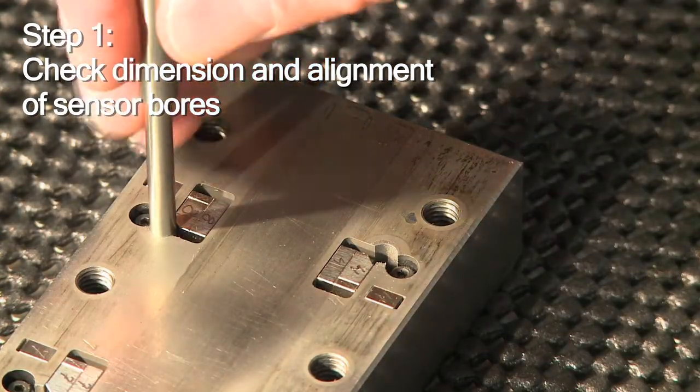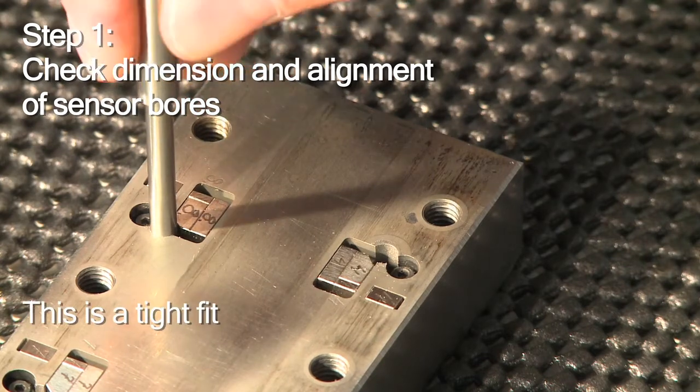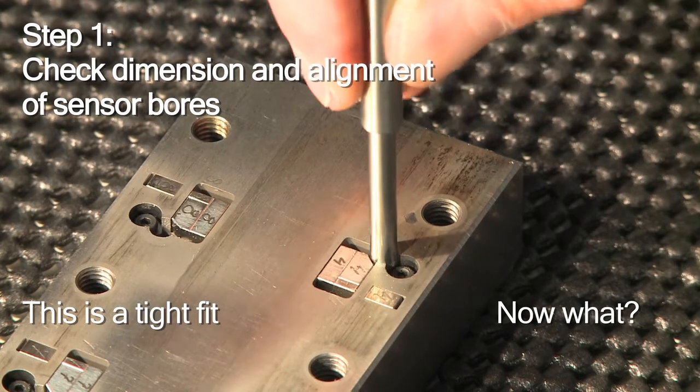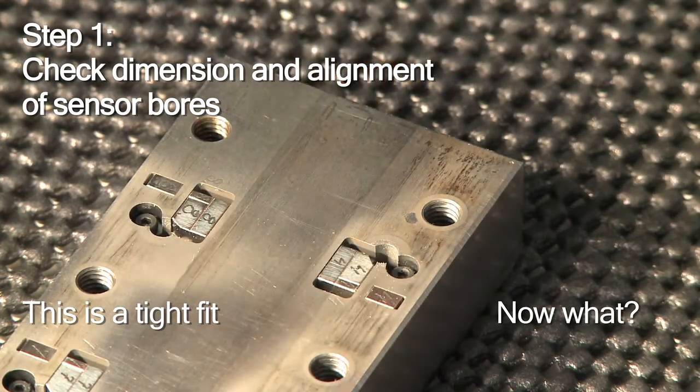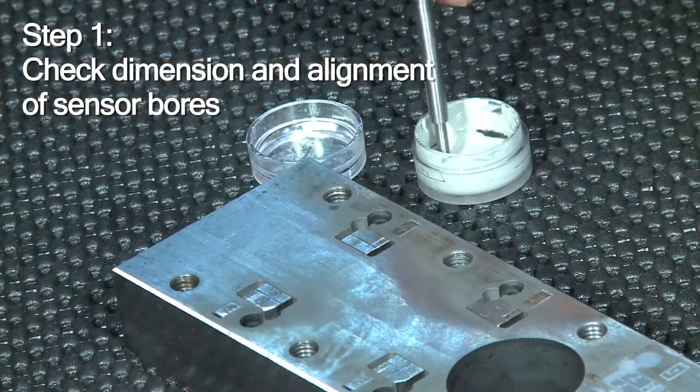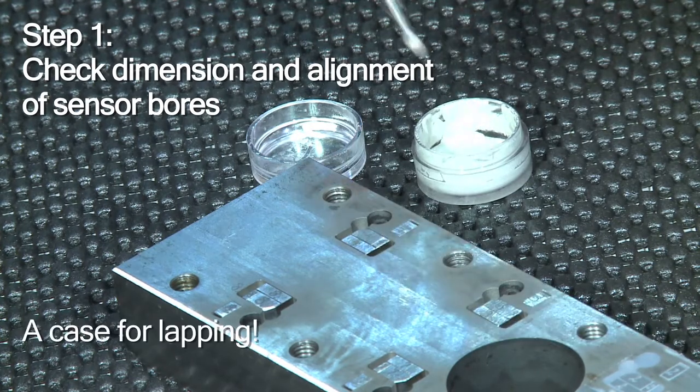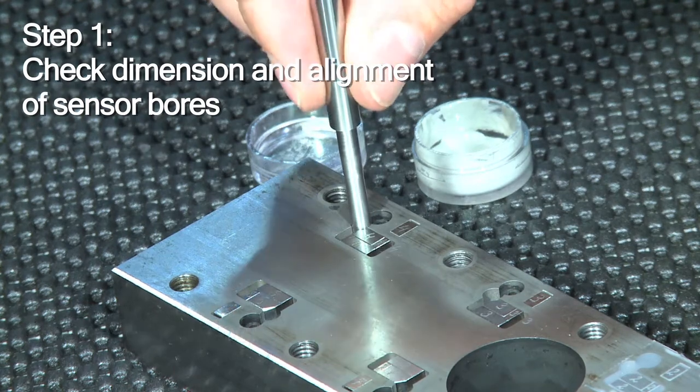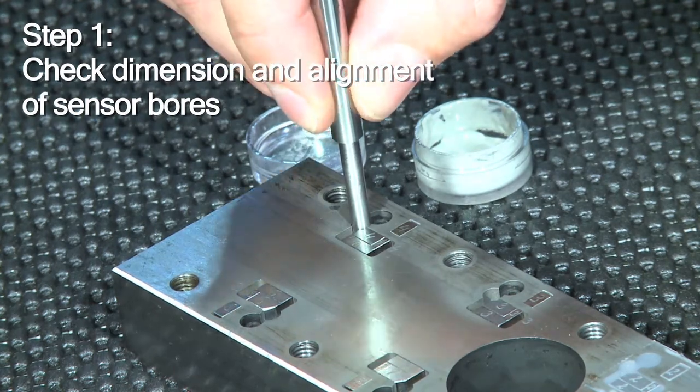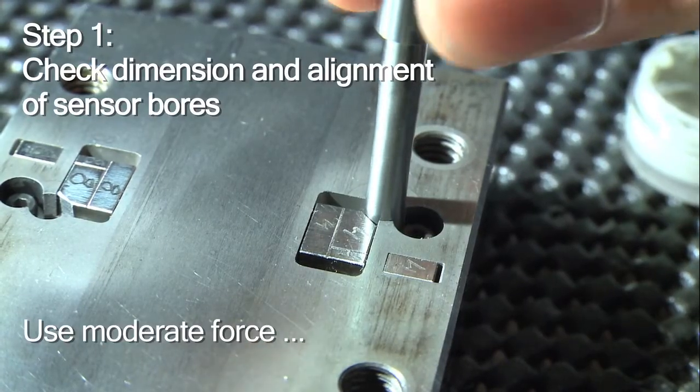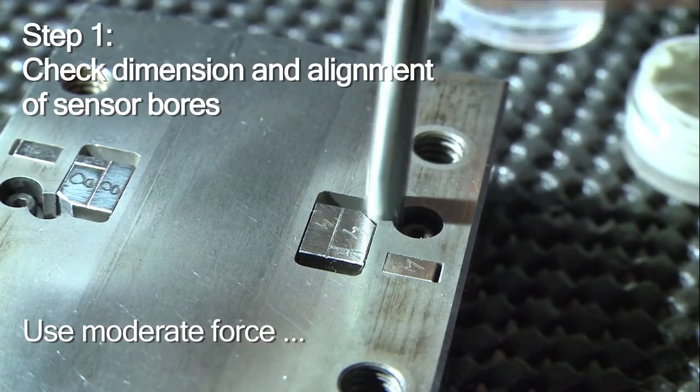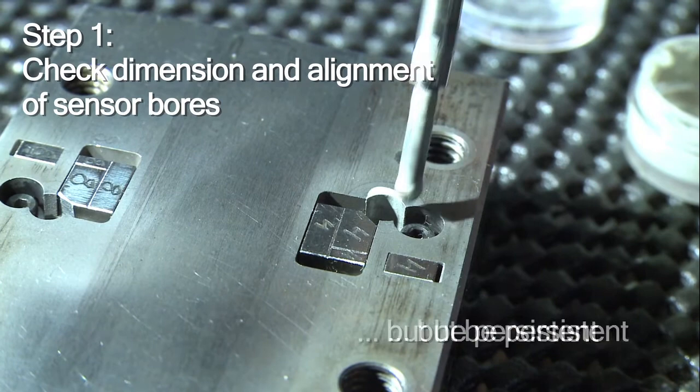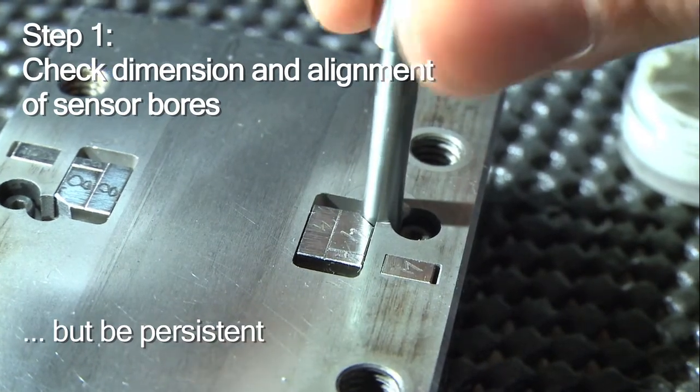However, there are cases in between. It's possible that the checking tool fits, but only just. This is still not good enough. That's when you use the checking tool to lap the hole. You apply some lapping compound to the tool, which now becomes a lapping tool. Don't use force while working the hole. It's not necessary. On the other hand, don't give up too soon. The procedure will take some time.